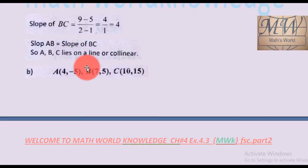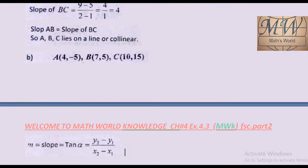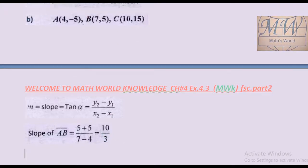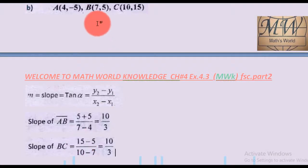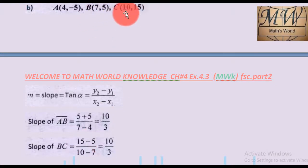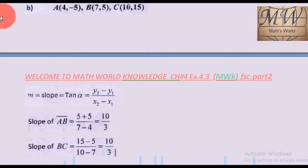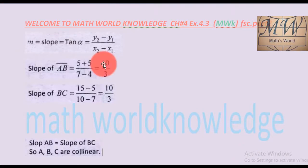Next, second part: A is (4, -5), B is (7, 5) and C is (10, 15). To find slope of AB: slope = (y2 - y1) / (x2 - x1) = (5 + 5) / (7 - 4) = 10/3. Now to find slope of BC: B is (x1, y1) and C is (x2, y2). Slope of BC = (15 - 5) / (10 - 7) = 10/3. Slope of AB and slope of BC are the same, so A, B, C are collinear and lie on the same line.